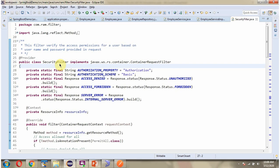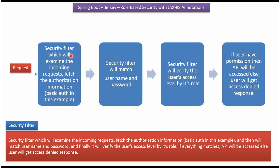Here I have defined the class SecurityFilter. In this class I have applied the Provider annotation, and this class implements the ContainerRequestFilter interface and provides an implementation of the filter method. What the SecurityFilter does is examine the incoming request and fetch the authorization information. In this example we will use Basic Auth authorization, so it will fetch the username and password. Then SecurityFilter will check whether the username and password are valid. If valid, it will check the user role, and if the user role has permission it will allow access to the API, otherwise it will deny the response.